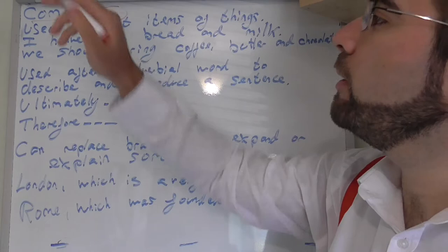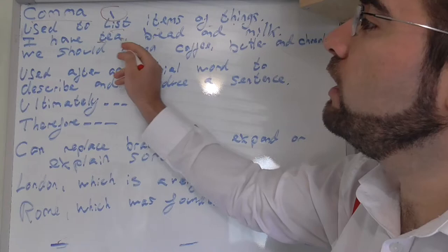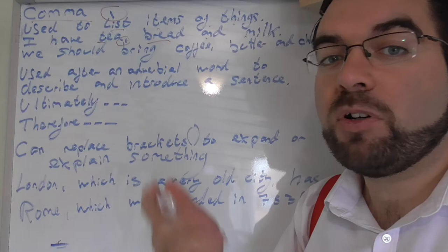OK, so let's look at the comma. The comma is used to list items of things. So I have tea, bread. Tea, comma, bread and milk.